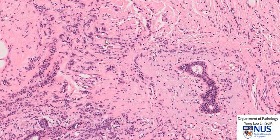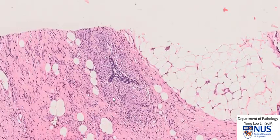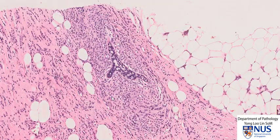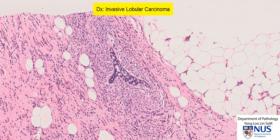Over here, we can see a very clear arrangement in cords or single file rows, and in this area it almost appears that the tumor cells are sort of surrounding this benign ductal structure. They're arranged almost in concentric rings around this benign structure. This is very classical for invasive lobular carcinoma.